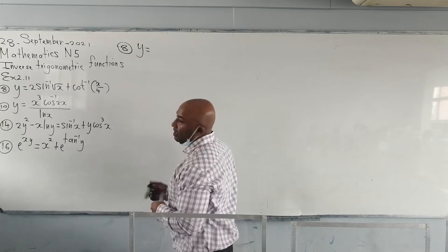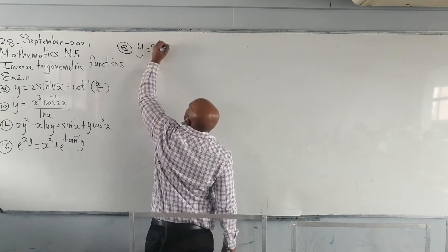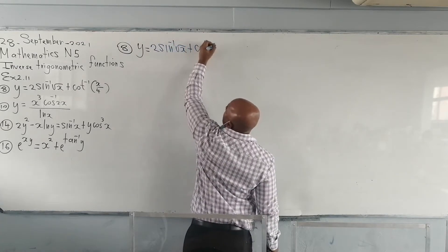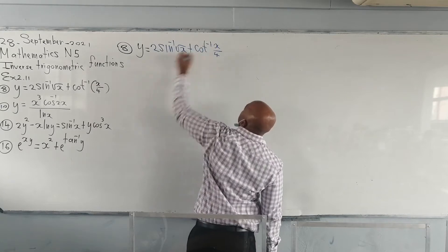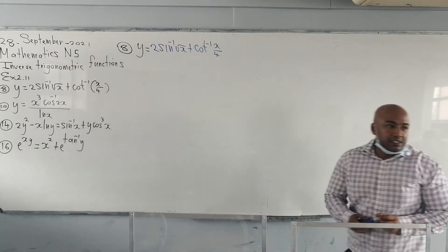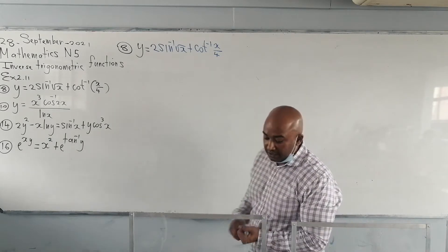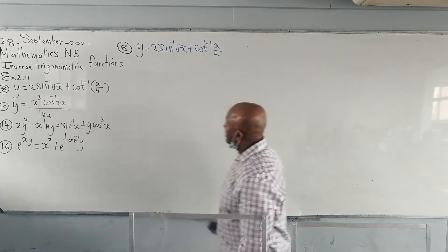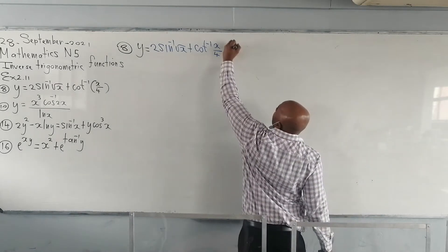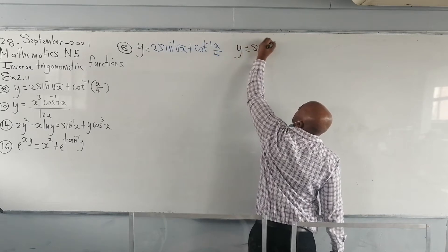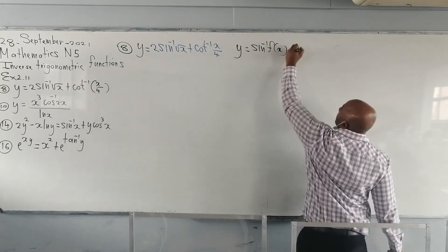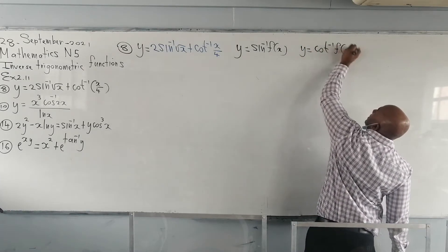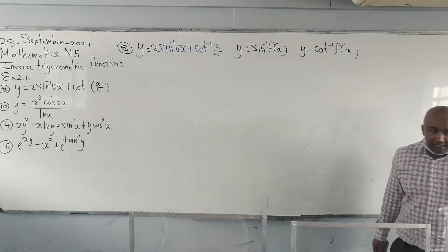So I've got 2 times inverse sine plus inverse cot of x over 4. Now let's look at what we're going to be dealing with here. We are dealing with inverse sine and then inverse cot. Your table of derivatives here gives y equal to inverse sine of f of x, and y equal to inverse cot of f of x. These are the formulas.